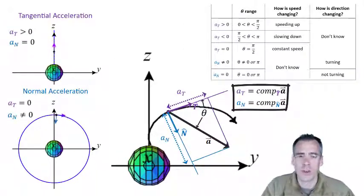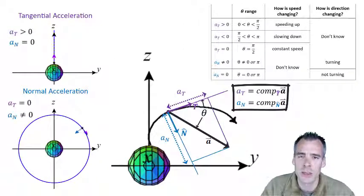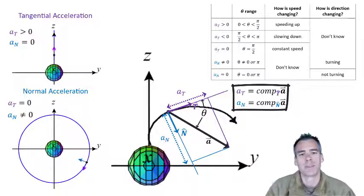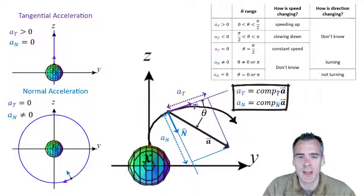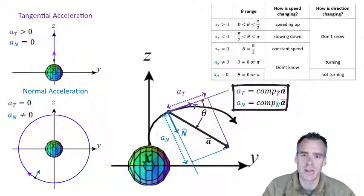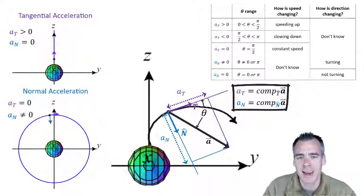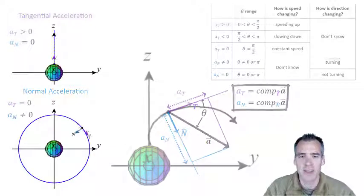So those are the basics of tangential and normal acceleration components. We can simplify these equations in the next video — converting them so we don't have to find the T and N vectors explicitly, which can take some work — and we'll apply that to an example problem. Until next time, take care.